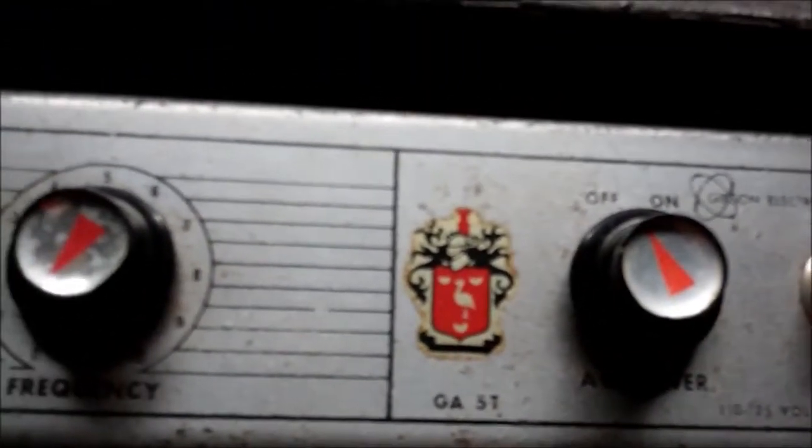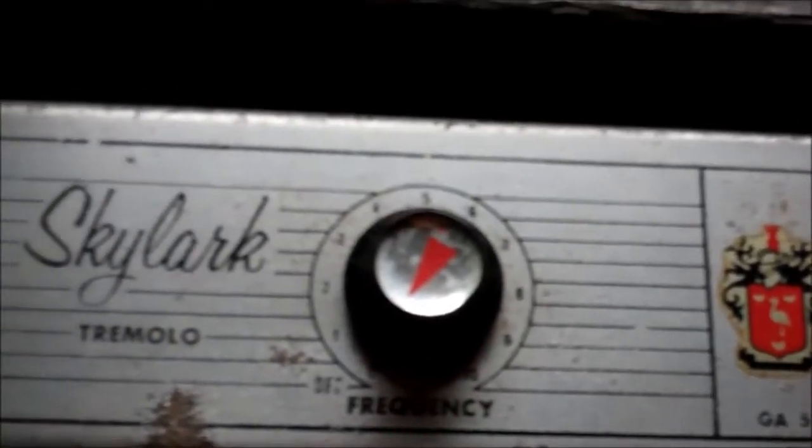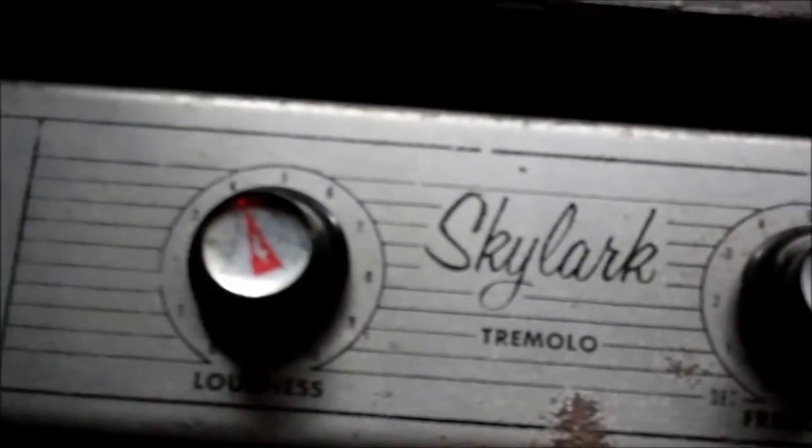So this is a GA5 circa 1962-63, and this one is the one in brown tolex. This is more commonly seen in black tolex. I think they only did them like this for about a year.